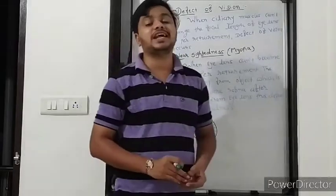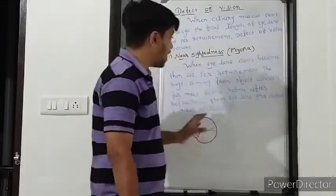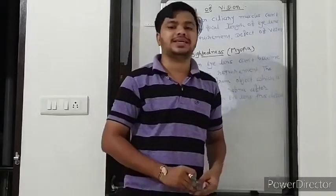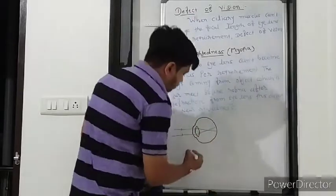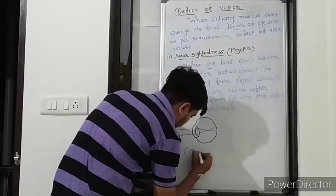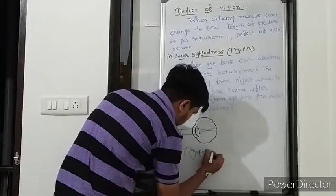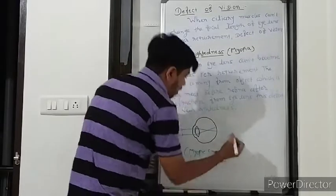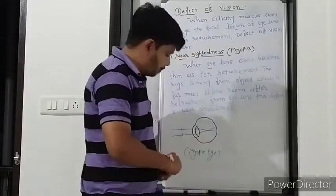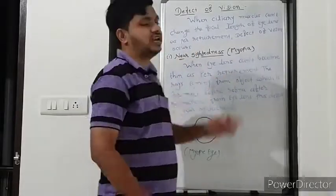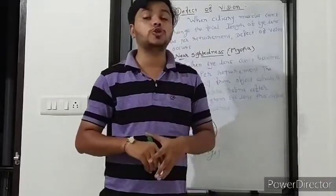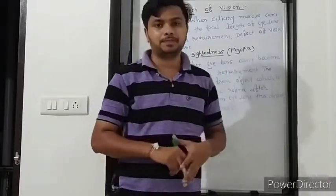This type of defect is known as nearsightedness, which is also called myopia. The nearsightedness is also known as myopia.